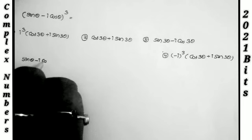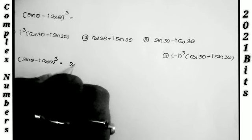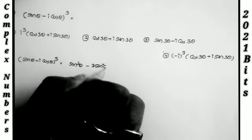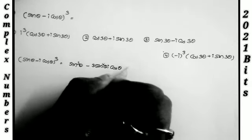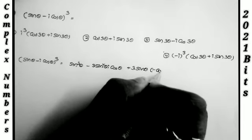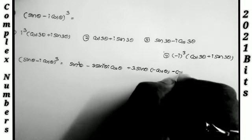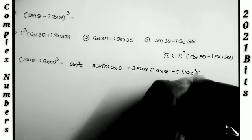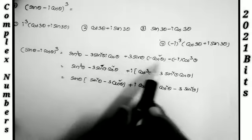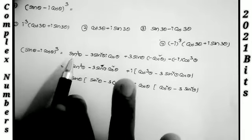Using the (a − b)³ expansion: a³ − 3a²b + 3ab² − b³. Here a = sin θ and b = i cos θ. So this gives sin³θ − 3sin²θ·(i cos θ) + 3 sin θ·(i² cos²θ) − i³ cos³θ. Note that i² = −1 and i³ = −i.